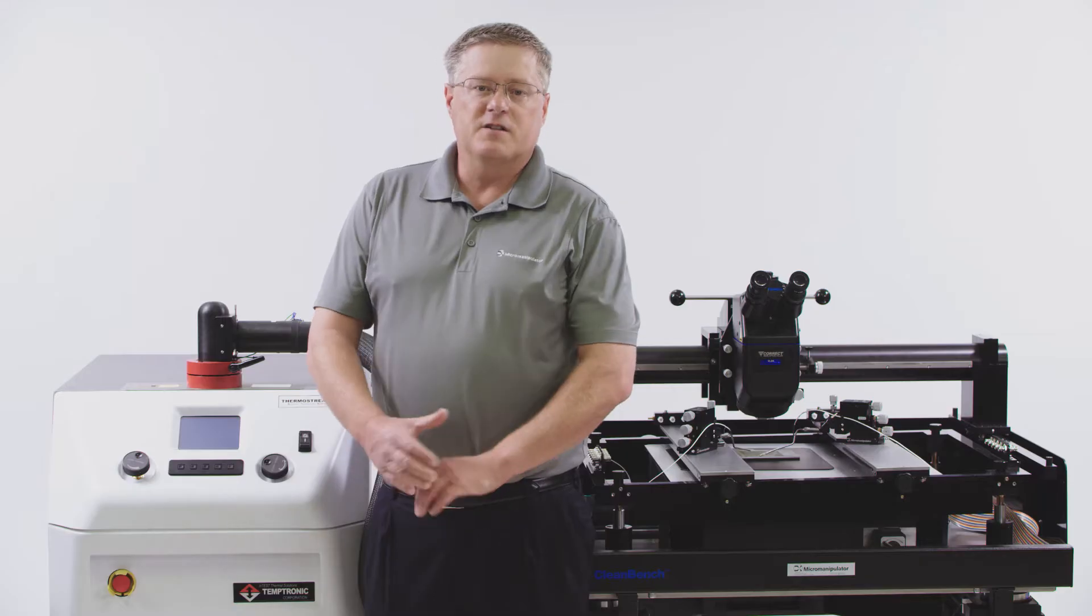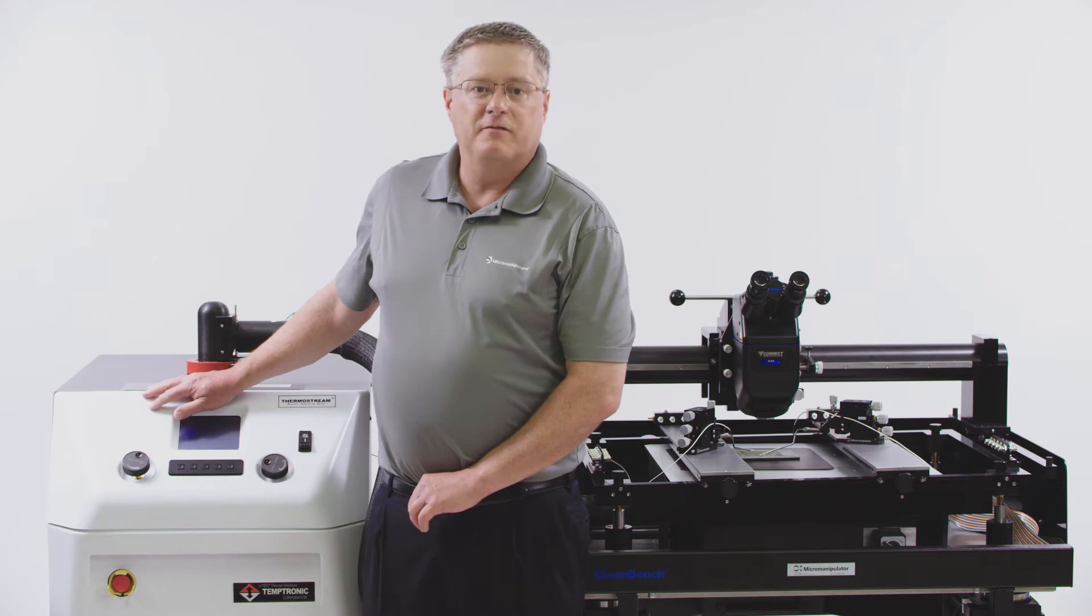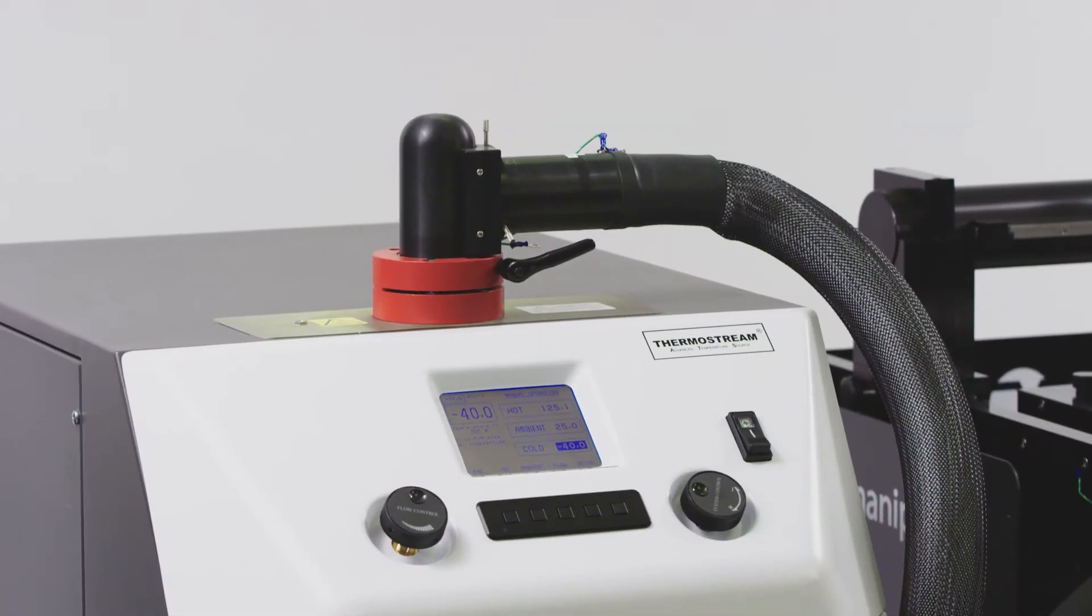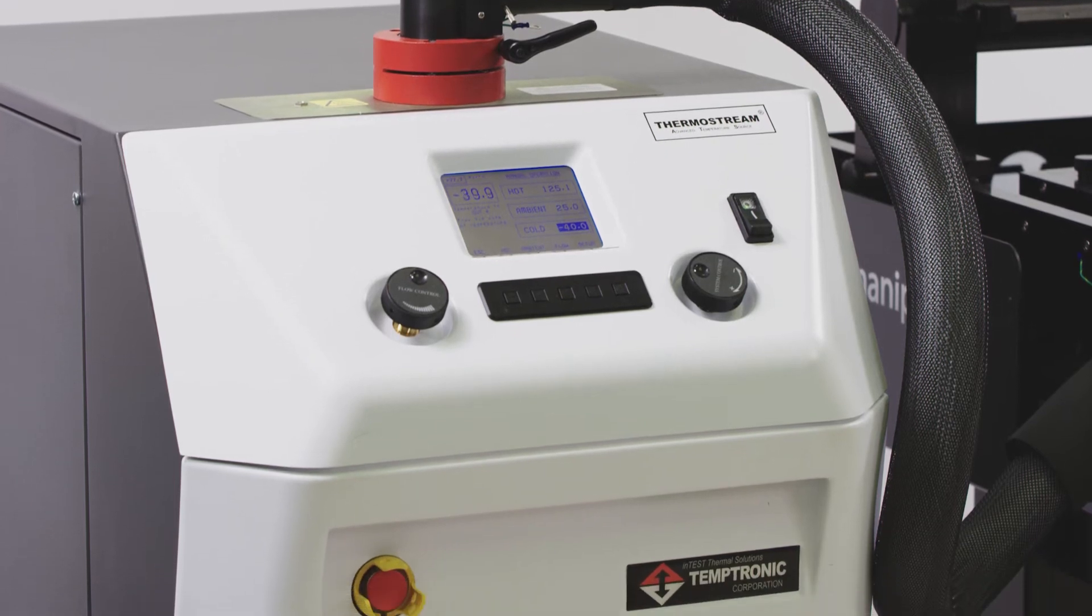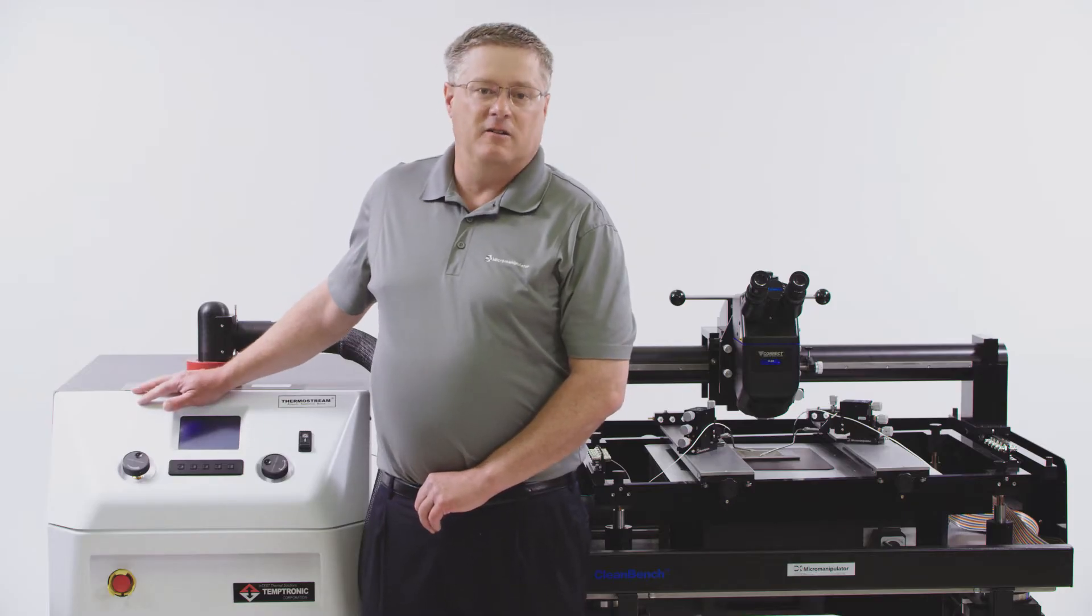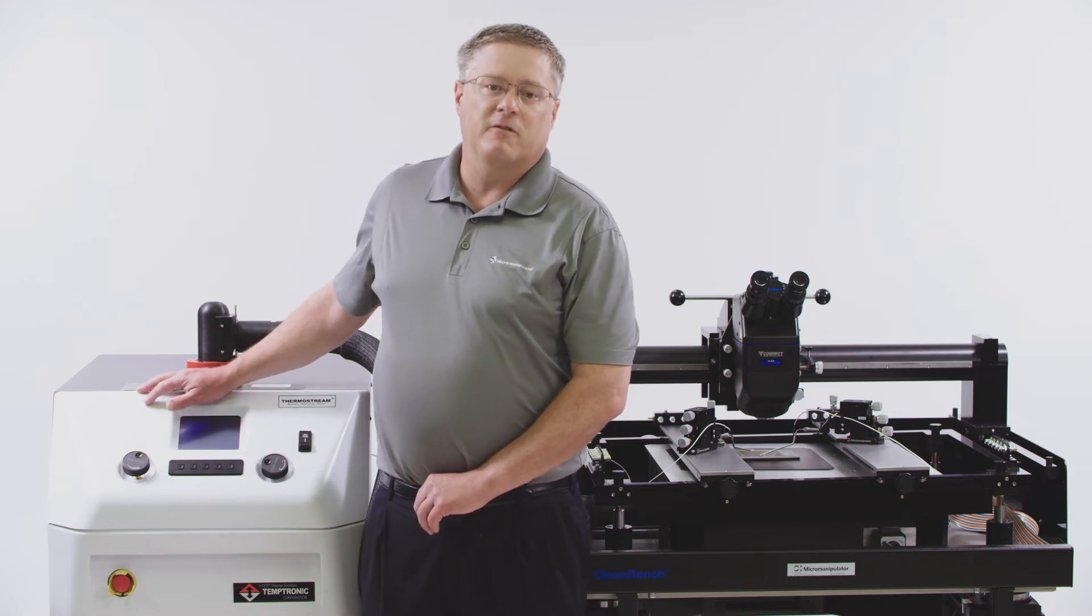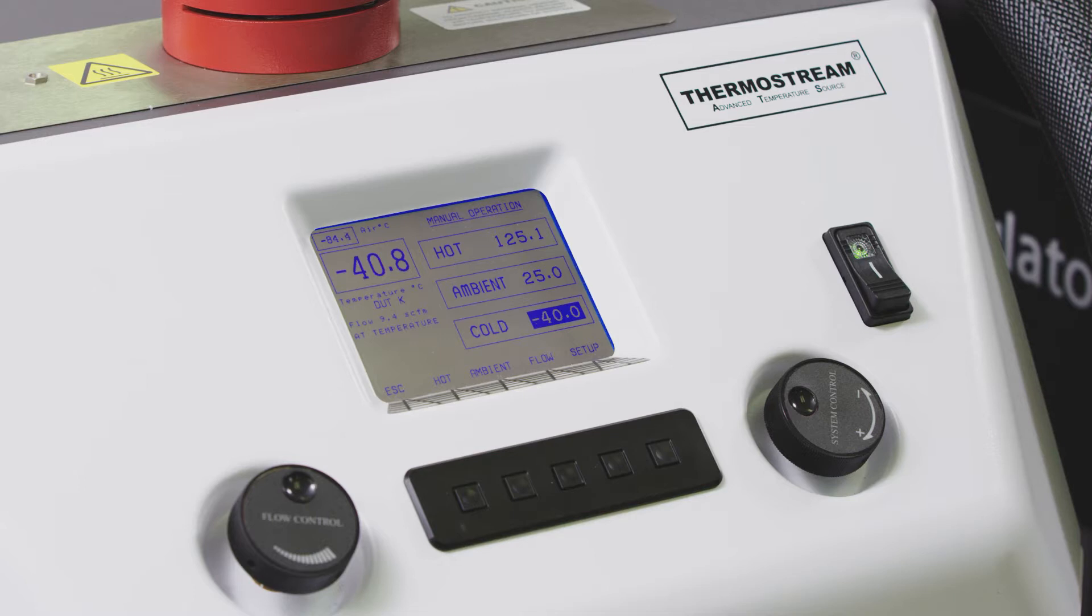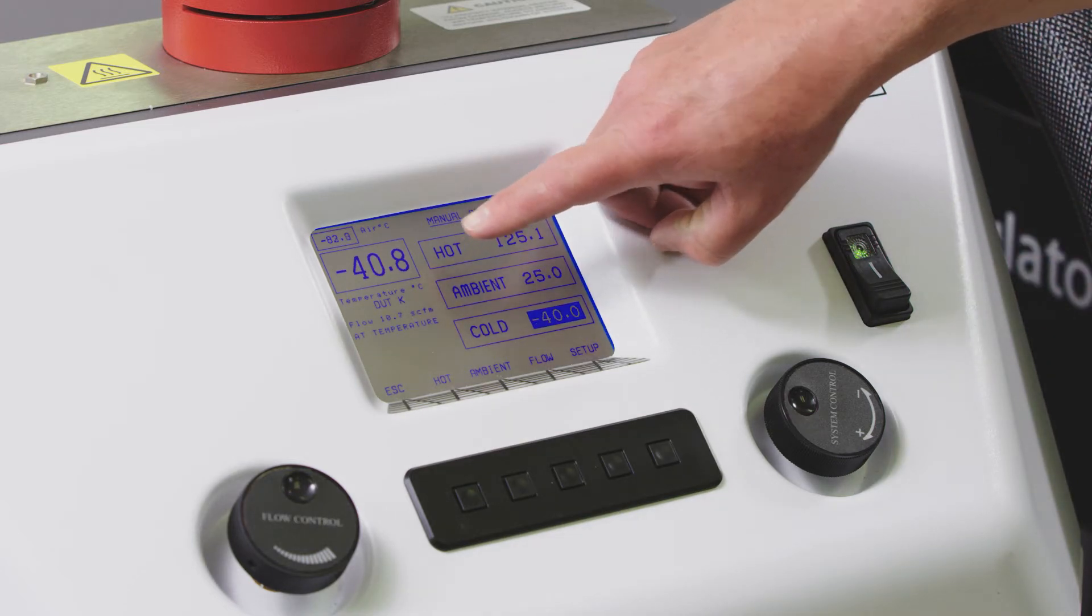Versas that are configured for temperature testing use industry standard off-the-shelf thermal forcing units. These units allow Versa to heat and cool your part frost free so that you could easily probe them. You probably already have these devices in your lab now to adapt them to your own Versa, but if you don't you can also buy them from micro manipulator. As you can see by the display on the thermal forcing unit, the temperature of the chamber is currently at minus 40C and there is no frost inside the chamber.